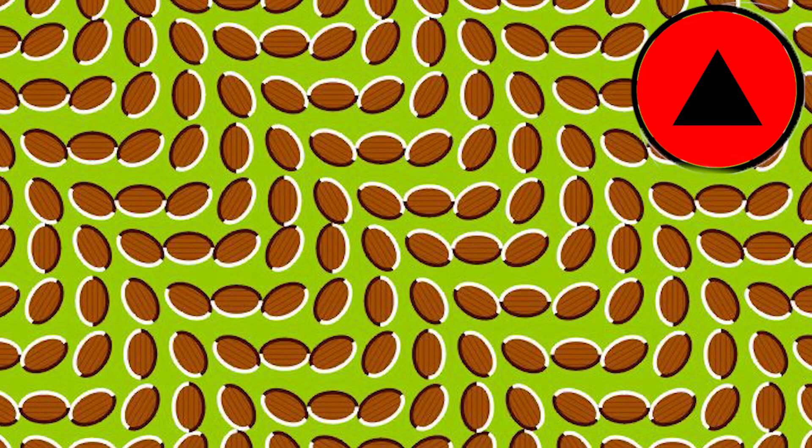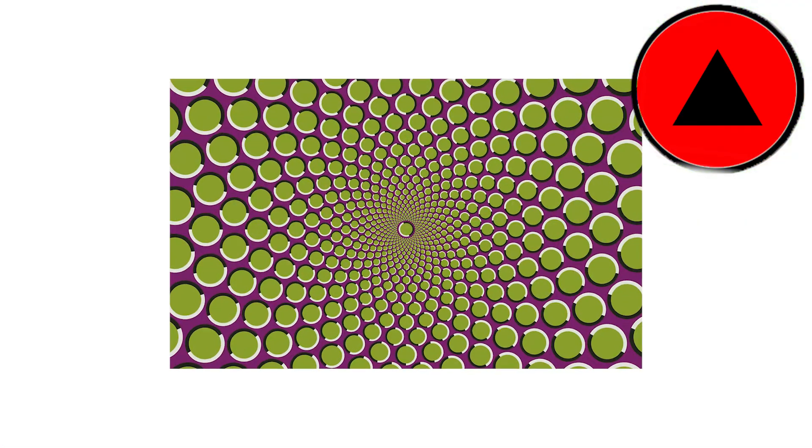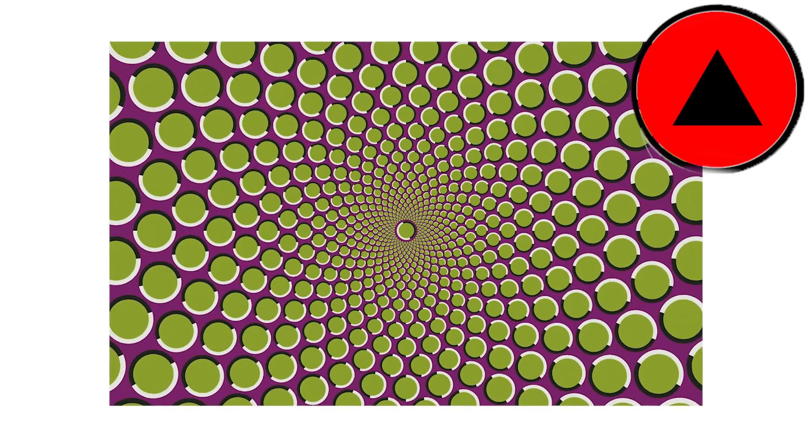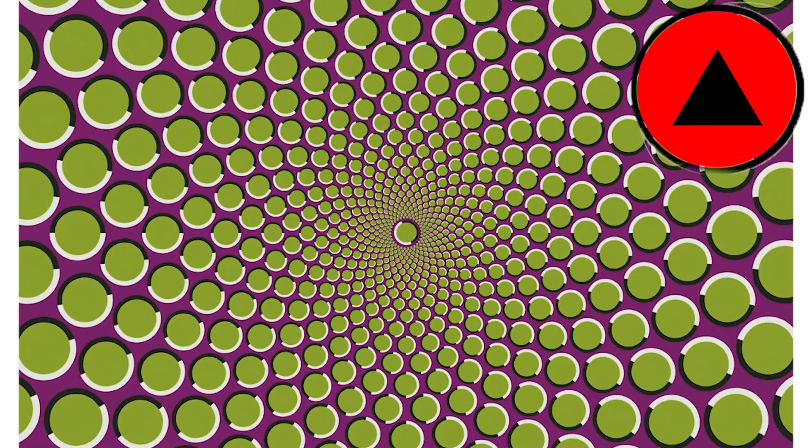Kanizsa. The Kanizsa illusion, sometimes known as the Kanizsa contour illusion, is a well-known visual illusion that was first described by Italian psychologist Gaetano Kanizsa in 1955.